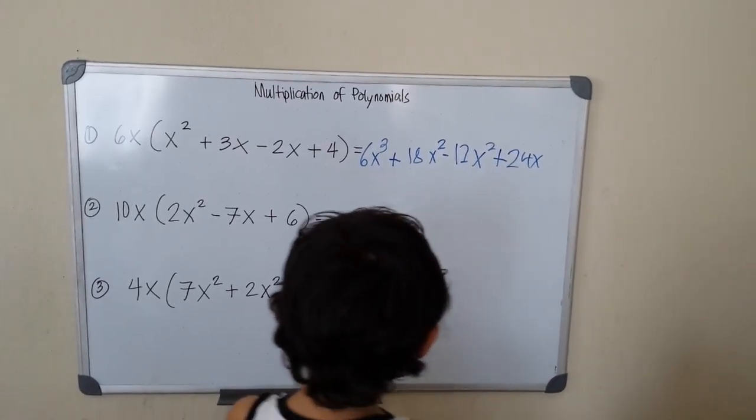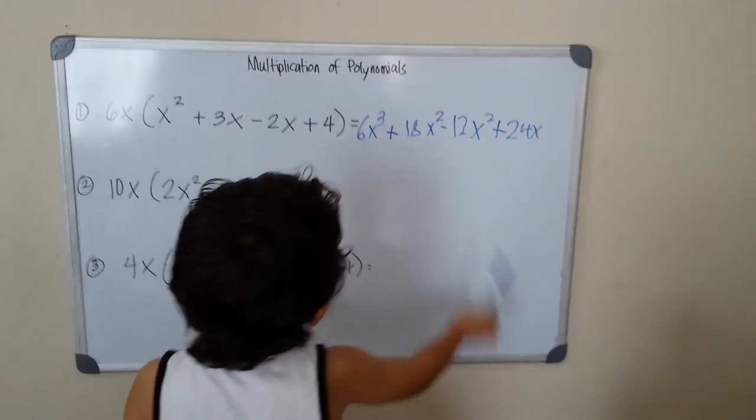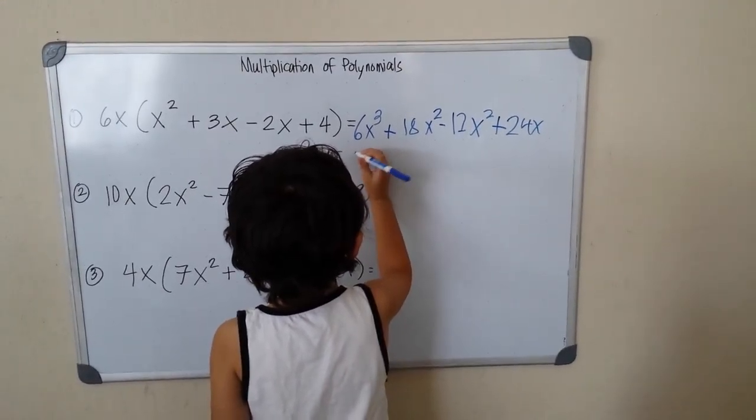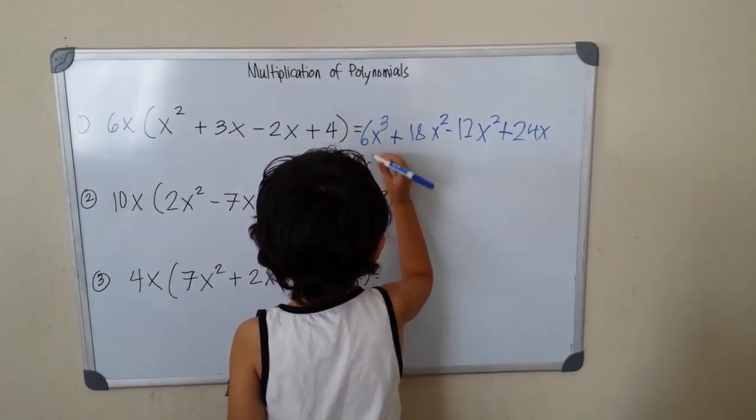So can we combine? Yes. So I can combine. So we put equals there, 6x cubed.